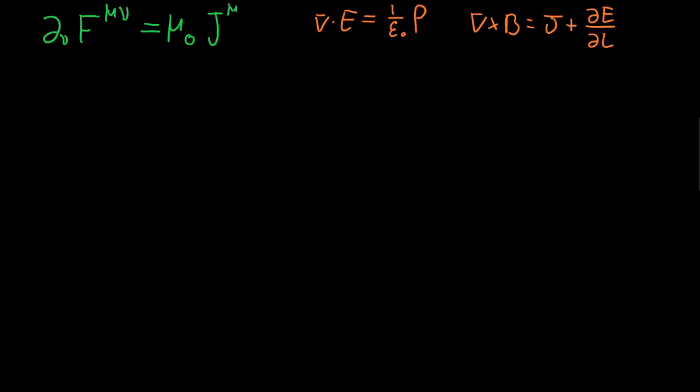Okay, so we are going to be talking about question 12.53 of Griffith's introduction to electrodynamics. Now I haven't got the question on the screen because all it's really asking is to prove the continuity equation with tensor notation.